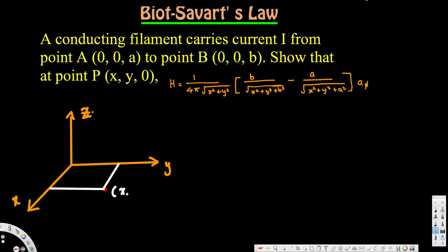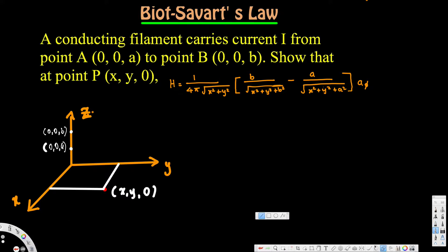We have a point P located at (x, y, 0), so that point is somewhere here. The conducting filament carries current i from point A to point B. Point A is located at (0, 0, a) and point B is located at (0, 0, b). The angle this line makes with the z-axis is alpha one.